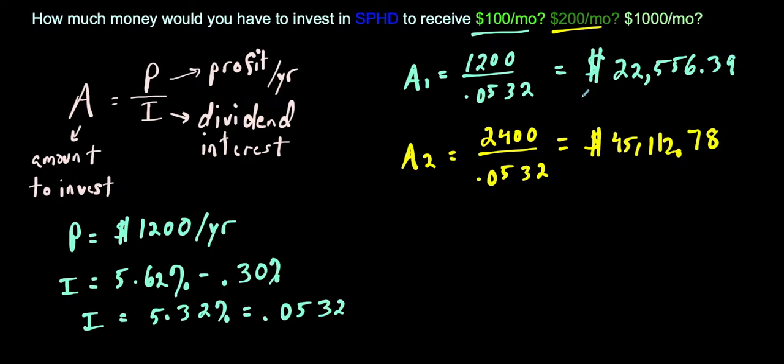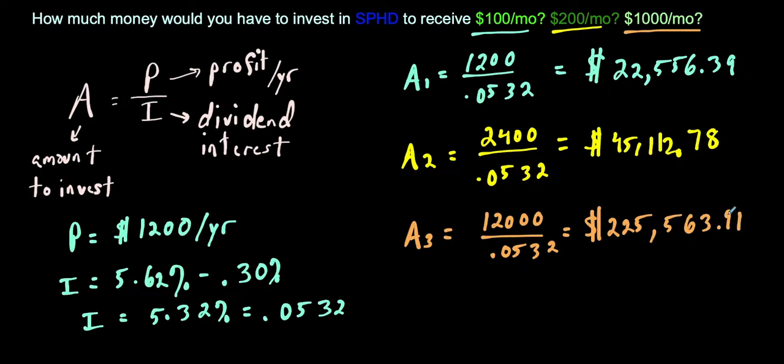Okay, and for the last one here, to make $1,000 per month, once again, that corresponds to making $12,000 for the year. And at an interest rate of 0.0532, we do the division, we would have to put up quite a bit of money $225,563.91.